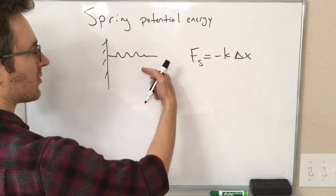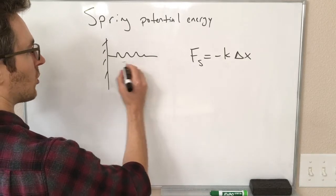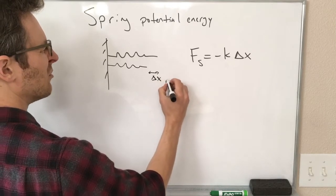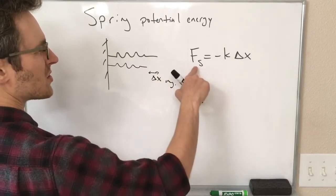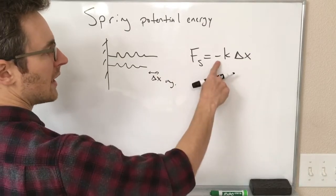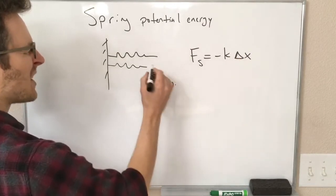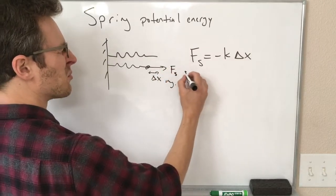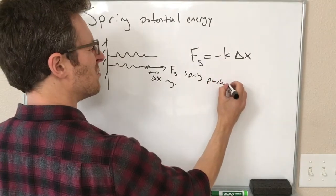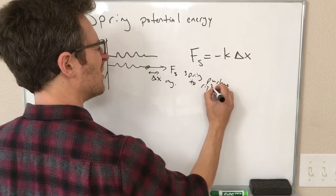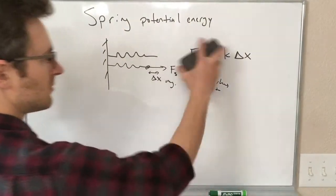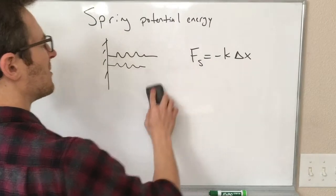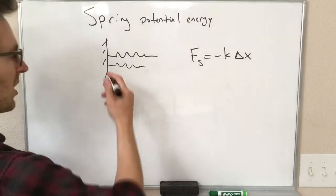So if I push on it to the left, meaning that it becomes shorter, delta x is some negative amount. Then the force of the spring on me is negative times a negative, which is positive. The spring exerts a force to the right. That's just a reminder of how this direction works.